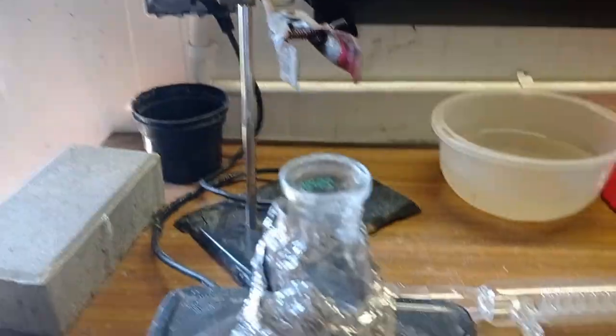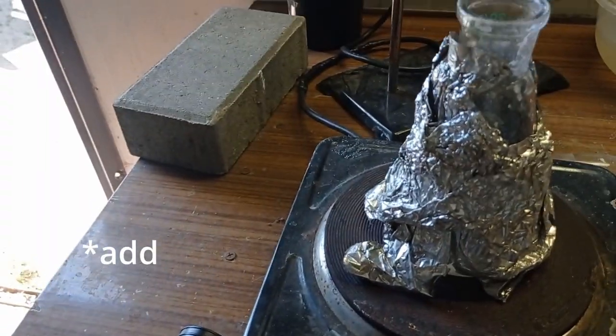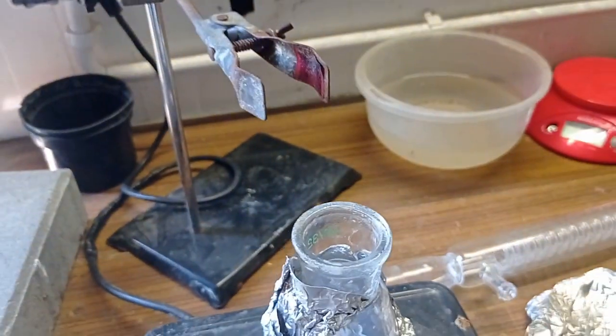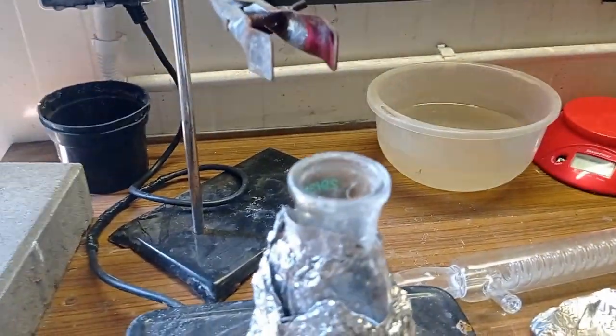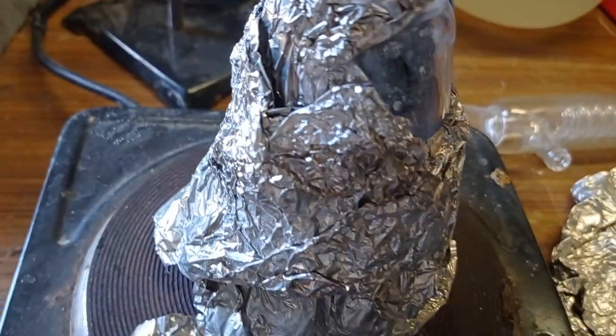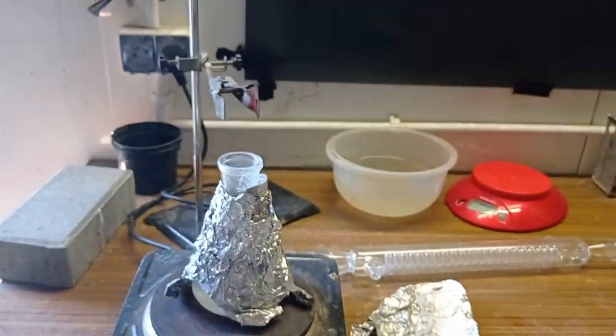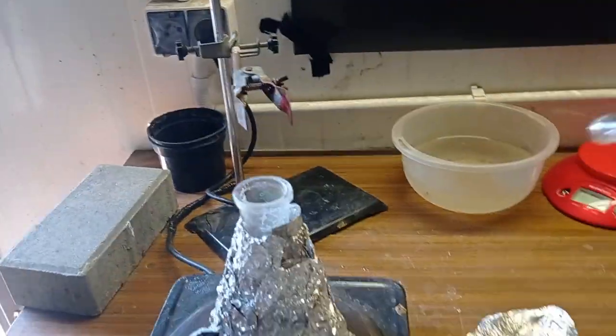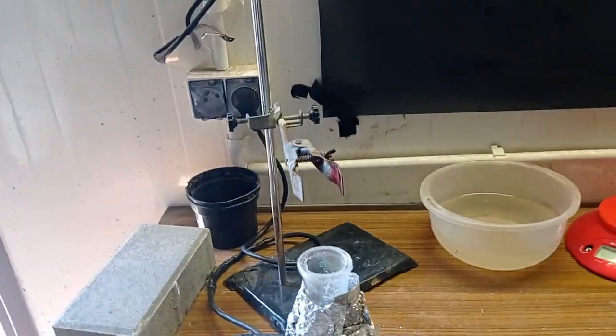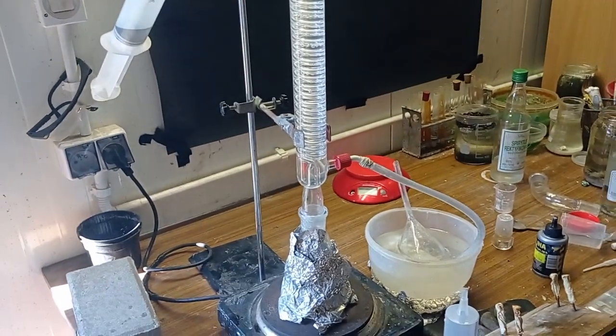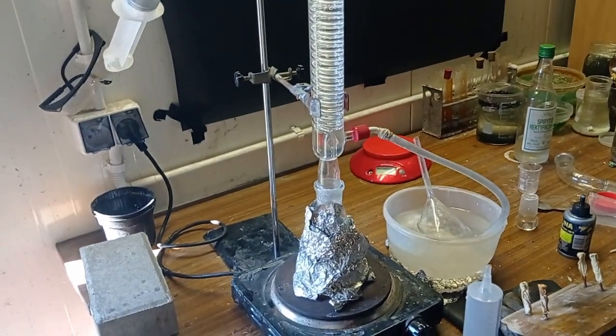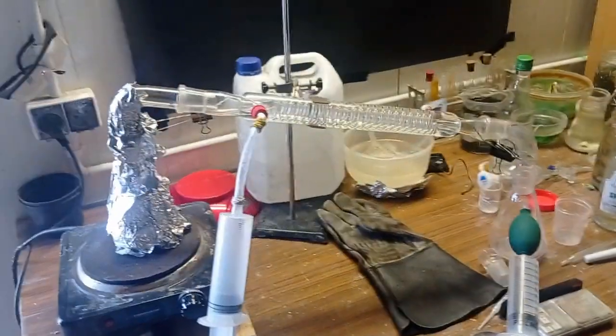The flask is covered with aluminum foil. Now I can add the sulfuric acid, here's about 5 milliliters. Now I can start reflux, but I have to assemble the reflux apparatus. I'll let it heat for six hours.